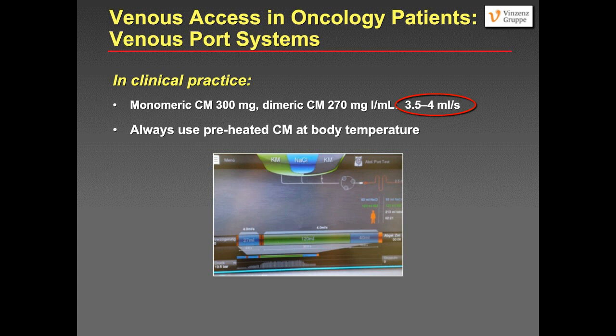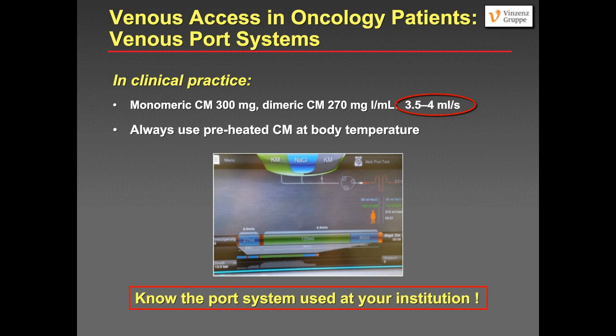In clinical practice, with our power injector and port system, we can consistently use a monomeric contrast at 300 mg/mL, or dimeric at 270 mg/mL, at a flow rate of 3.5 to 4 mL/sec without problems. A very important point is to always use preheated contrast material at body temperature, because that lowers the viscosity and enables a higher injection rate. The key message is that you must always know the port system implanted at your institution and read the instruction leaflet carefully.